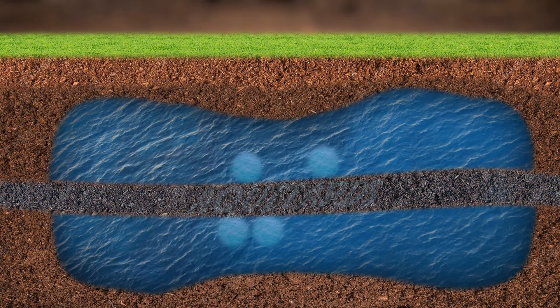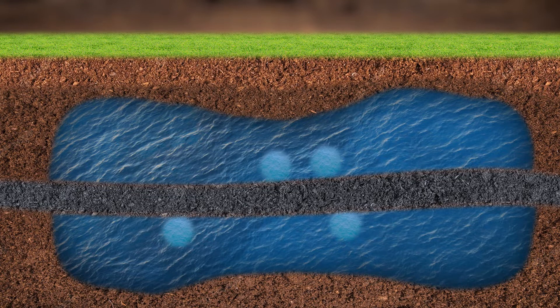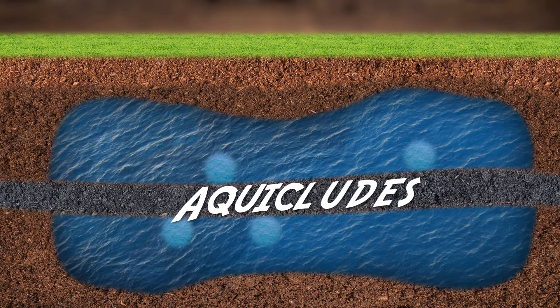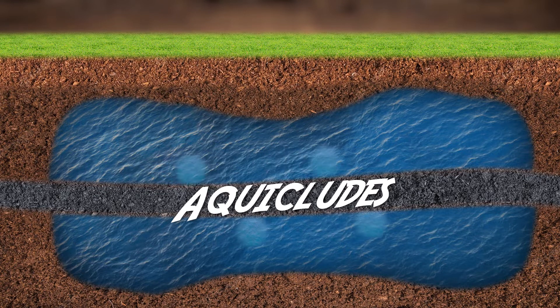However, sometimes a permeable soil allowing free movement between aquifers gets saturated and plugged up. This creates impermeable layers called aquacludes that prevent free flow of water between aquifers.